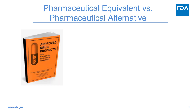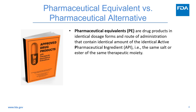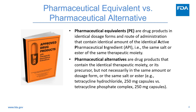This slide shows the Orange Book's definition. Pharmaceutical equivalents are drug products in identical dosage forms and route of administration that contain identical amounts of the identical active pharmaceutical ingredient, API — that is, the same salt or ester of the same therapeutic moiety. Pharmaceutical alternatives are drug products that contain the identical therapeutic moiety or its precursor, but not necessarily in the same amount, dosage form, or the same salt or ester. For example, tetracycline hydrochloride versus tetracycline phosphate.